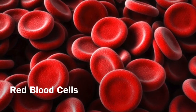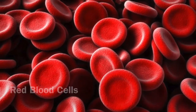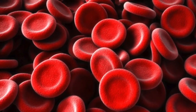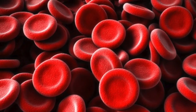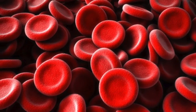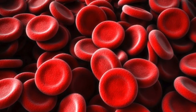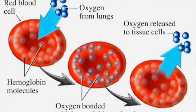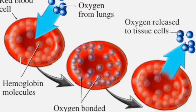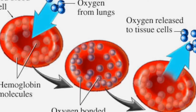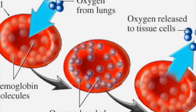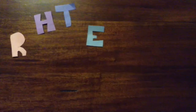The red blood cell, in scientific terminology, are called erythrocytes. They carry oxygen, carbon dioxide, and nutrients around the body. Red blood cells are part of the connective tissue and are found all around your body in arteries, capillaries, and veins.